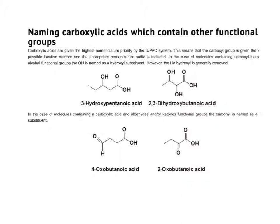On these bottom examples, we have functional groups present. Counting four carbons with a carboxyl group gives us butanoic acid. The substituent shown is an oxo group coming off of carbon four, so we call that 4-oxobutanoic acid. This is what we see when a carboxylic acid has either an aldehyde or a ketone added to it. The second example has that double-bonded oxygen coming off of carbon two, carbon one being the carboxyl carbon, so we would call that 2-oxobutanoic acid.